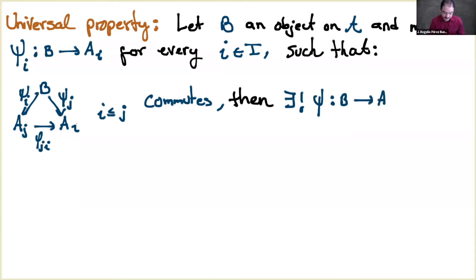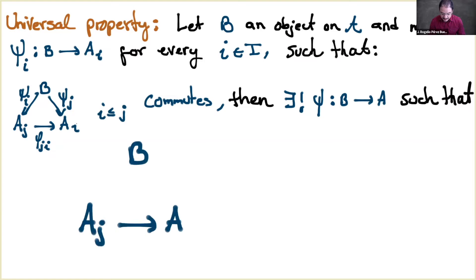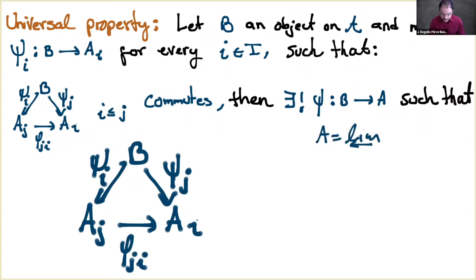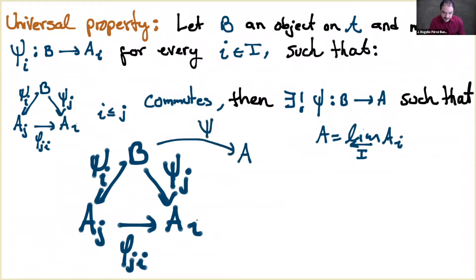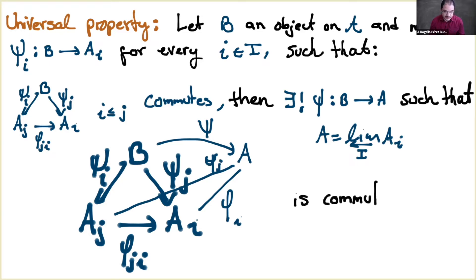Here A is the projective limit. So there exists a φ such that this diagram is commutative. Remember that I have another diagram with A, the projective limit, and the morphisms φ_i, φ_j, with a lot of triangles, and I ask that each one of these triangles is commutative — so the whole diagram is commutative.